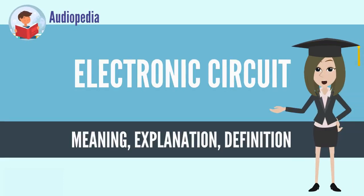An electronic circuit is composed of individual electronic components, such as resistors, transistors, capacitors, inductors and diodes, connected by conductive wires or traces through which electric current can flow. To be referred to as electronic, rather than electrical, generally at least one active component must be present.